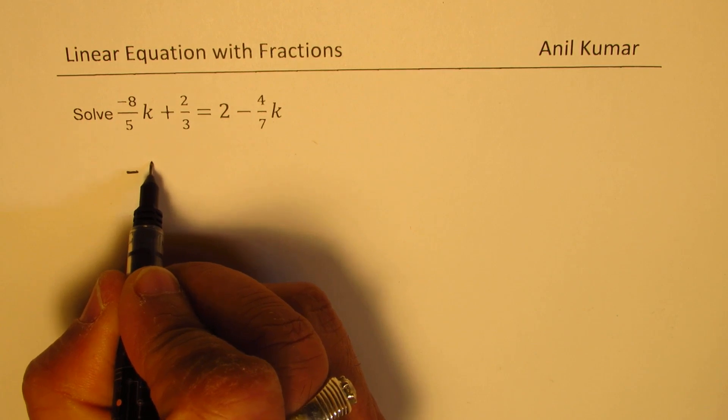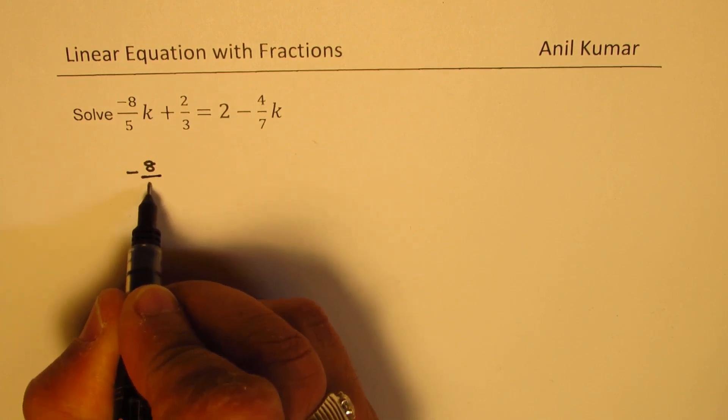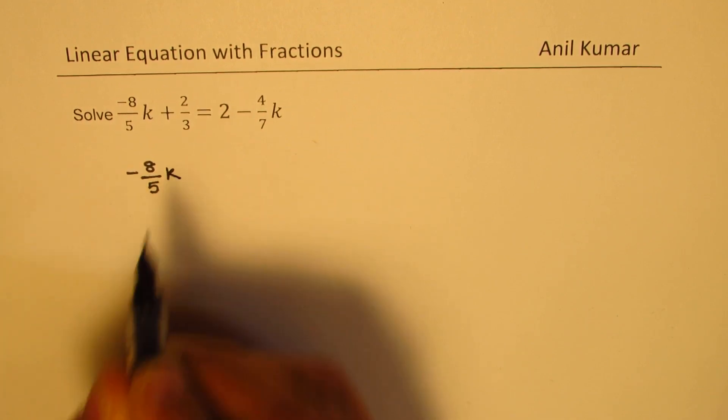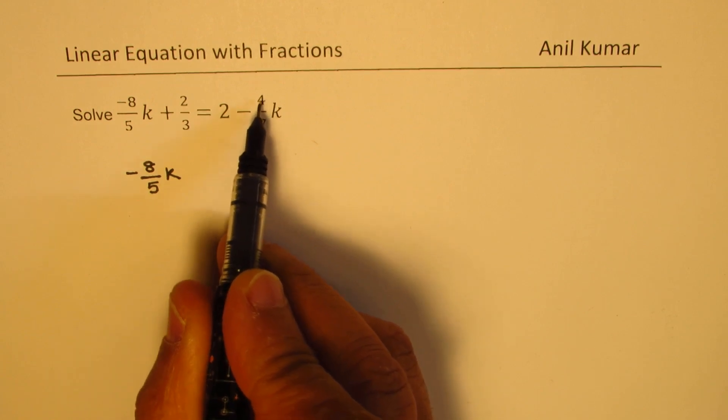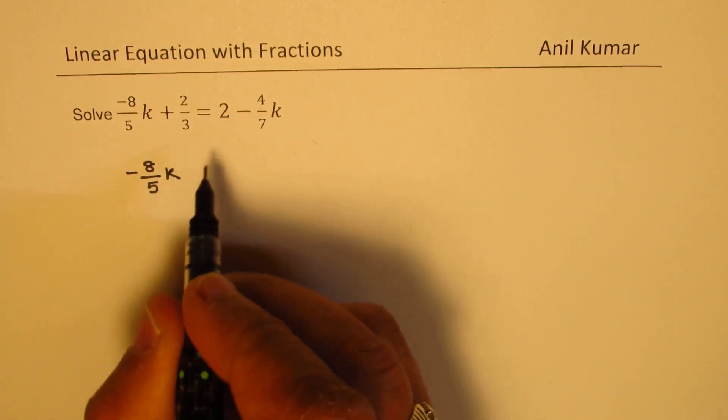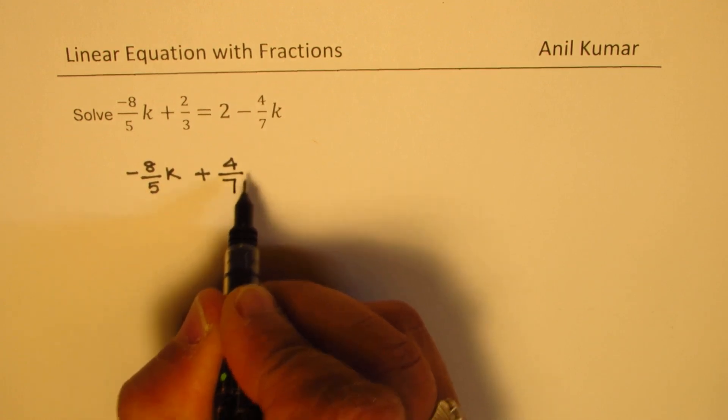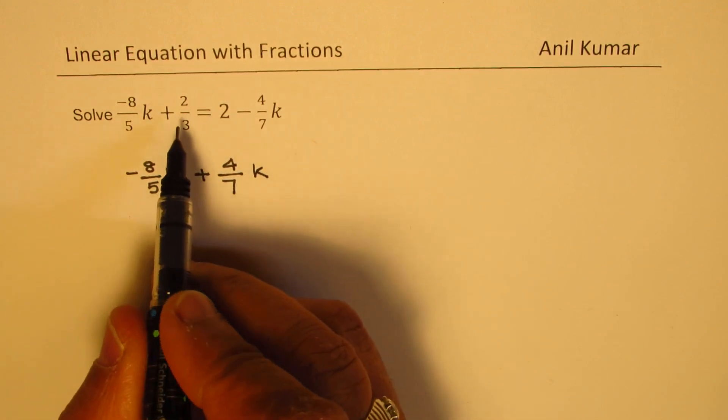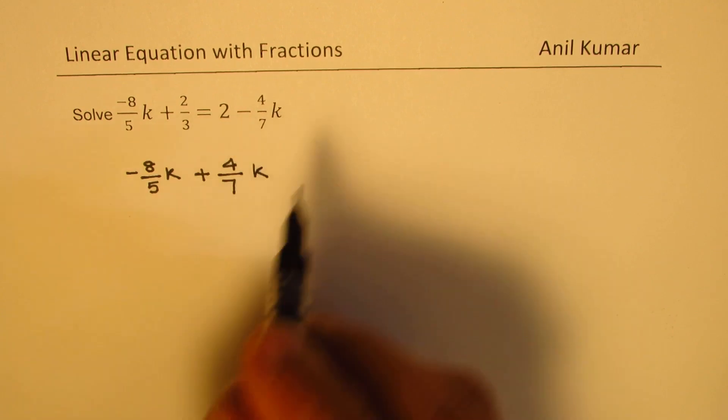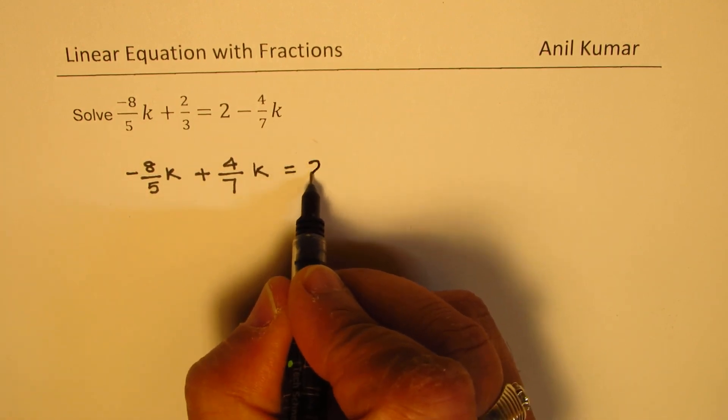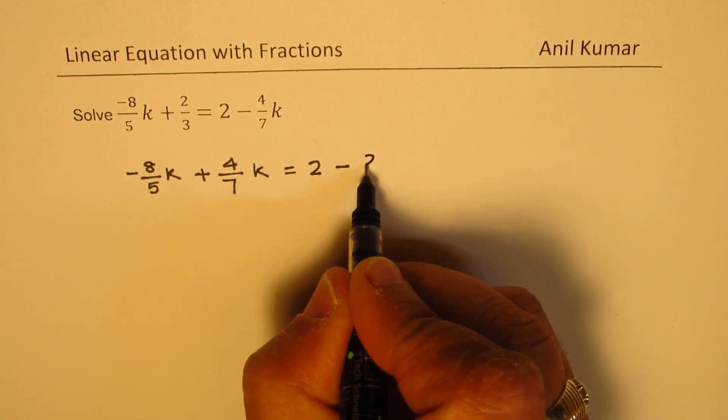So we have the equation as minus 8 over 5k. We will bring that part minus 4 over 7k to the left side. So that comes with a positive sign. The sign changes. And the fraction part 2 over 3 will take it to the right hand side. So it becomes 2 minus 2 over 3.